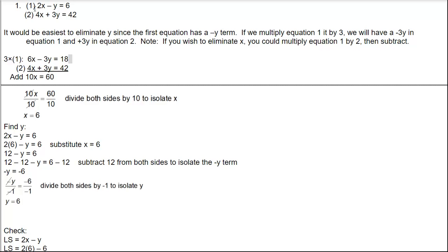So we're taking the first equation and multiplying it by 3: 2x times 3 is 6x, negative y times 3 is minus 3y, and 6 times 3 is 18. The second equation is written exactly as it is. Since the y terms are opposites, we add to eliminate the y's. 6x and 4x adds to 10x, and 18 and 42 add to 60, so we have 10x equals 60.